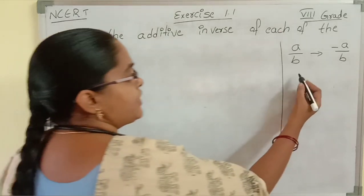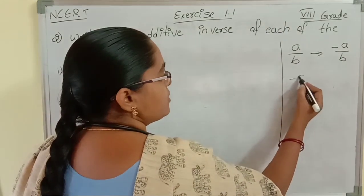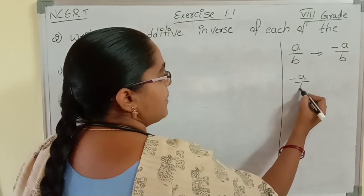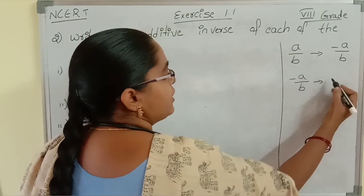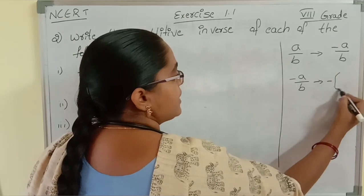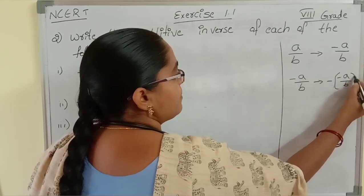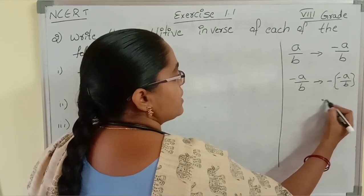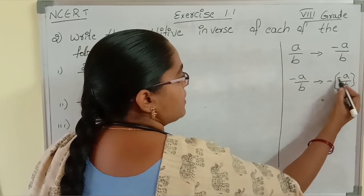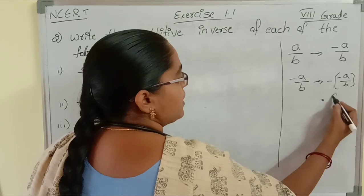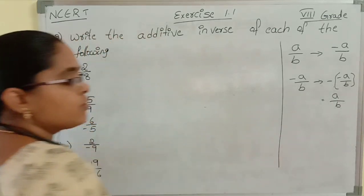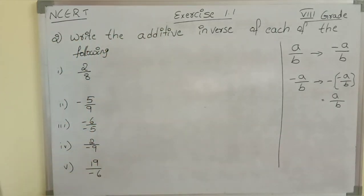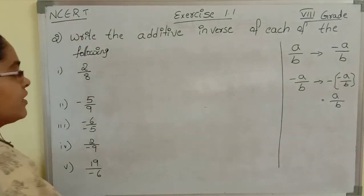If the rational number is minus a by b, then its additive inverse is minus of minus a by b, which is nothing but minus into minus, giving plus a by b. So like this we will write the additive inverse of the rational numbers.